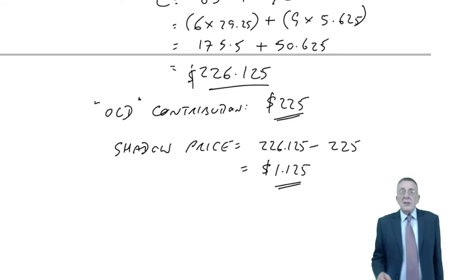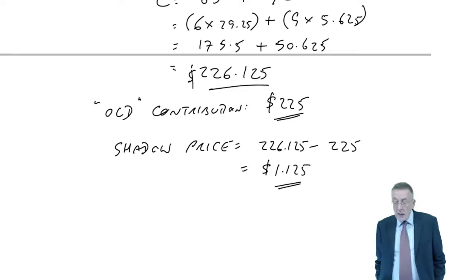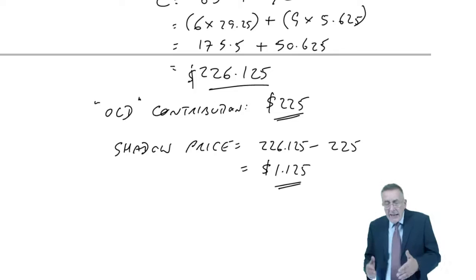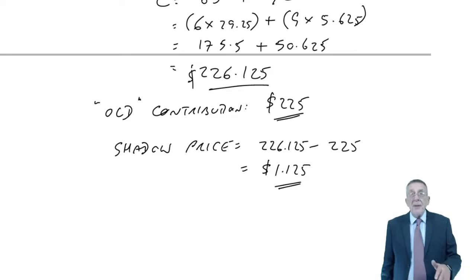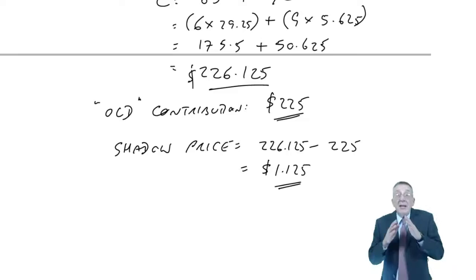What was it before when we only had 80 kilos? The old contribution was $225. Therefore, having the one extra kilo increases the contribution by the difference, and that is the shadow price. Here it's $1.125. Although the shadow price of materials is $1.125, that doesn't mean we're prepared to pay $1.125.